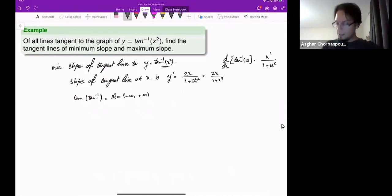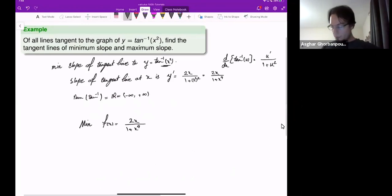So the problem now is that find minimum of this guy, this is a new function. I will call it f at x, which is 2x over 1 plus x to the fourth on negative infinity to plus infinity.